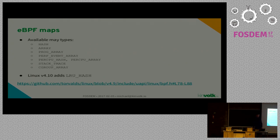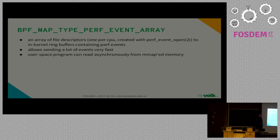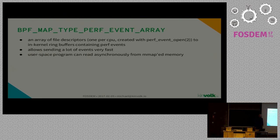That's the list of existing maps right now. We have a hash which works like you'd expect from a map — key-value. We have an array and then different types for special use cases. One worth highlighting is the perf event array type. It's an array of file descriptors with perf event data. The kernel can just write into a ring buffer without waiting for user space, and the user space program can map the ring buffer memory and read from it asynchronously. This is a map type you'd often use with kprobes to trace something, as we'll see in an example.